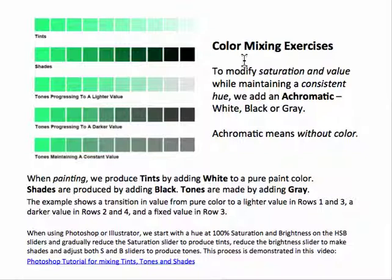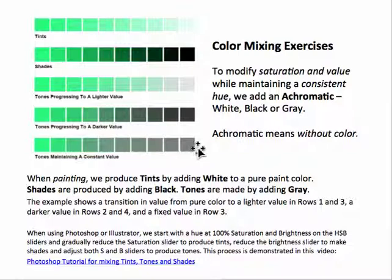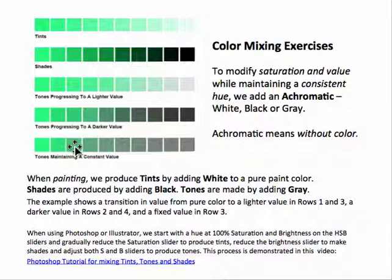Here are color mixing exercises. If we start with a pure hue and want to modify saturation and value while maintaining a consistent hue, we add an achromatic — white, black, or gray. For a monochrome palette, whether using paint, digital media, or printing, we start with one color and then add white to make tints, add black to make shades, and add a light gray to make tones — which has a different quality than tints and gets lighter in value. Adding a darker gray gets darker in value, and we can maintain a fairly consistent value where the whole row looks like the same gray when converted to grayscale.